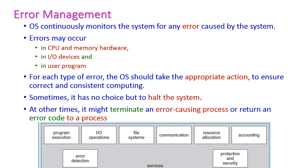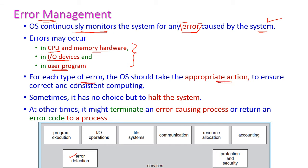Another important service is error detection, also called error management. The operating system continuously monitors the system for any errors. Errors may occur in the CPU, memory hardware, IO devices, or in a user program. For each type of error, the operating system should take an appropriate action to ensure correct and consistent computing.